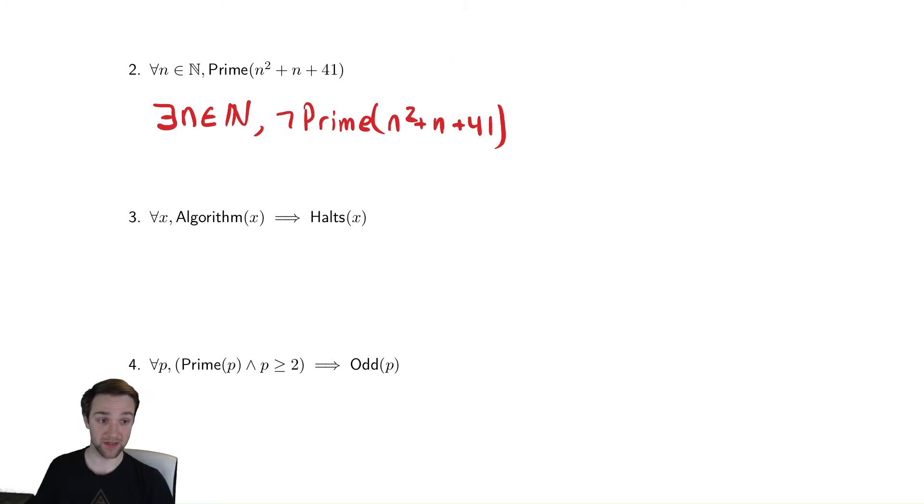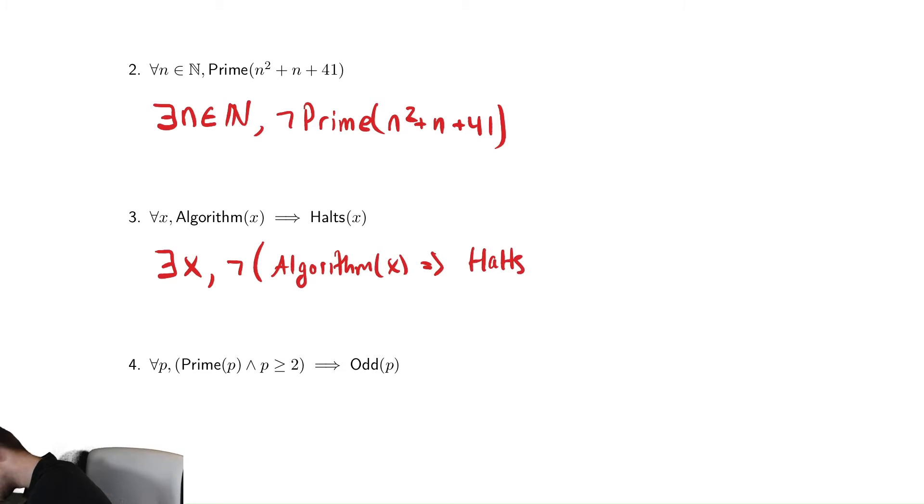The next one is every algorithm halts. We saw this example earlier. So the opposite of this is there exists an x such that not algorithm it implies halts of x. And as we saw in our predicate logic, the negation of an if-then statement is not an if-then statement. So we write that as p and not q for p implies q. So we write this as algorithm of x and not halts of x.